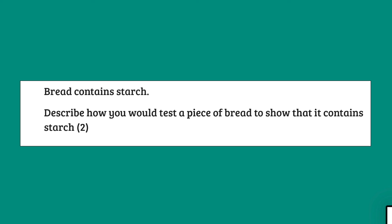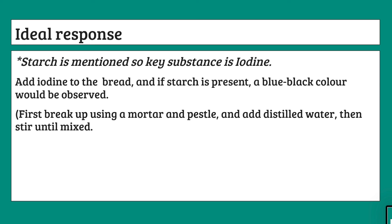Here's a practice question: 'Bread contains starch. Describe how you would test a piece of bread to show that it contains starch.' (2 marks.) Instantly, think about what substance we use for starch — it's iodine. An ideal two-mark response: add iodine to the bread, and if starch is present, a blue-black color would be observed. Note that you don't need to state the initial color — you just need to state what color change indicates the presence of starch.